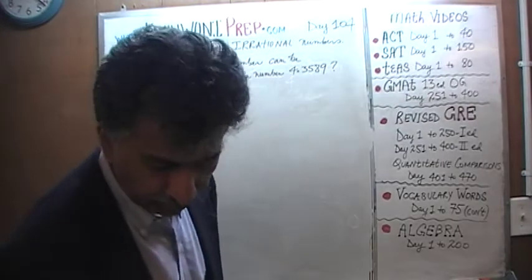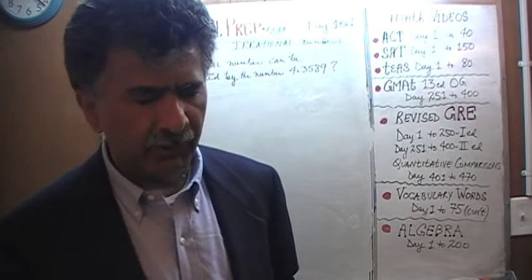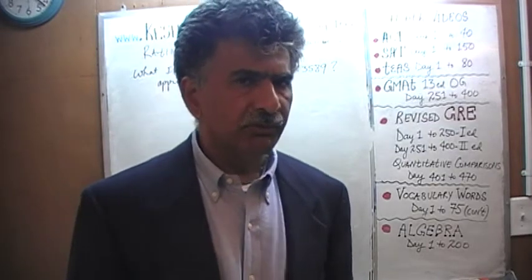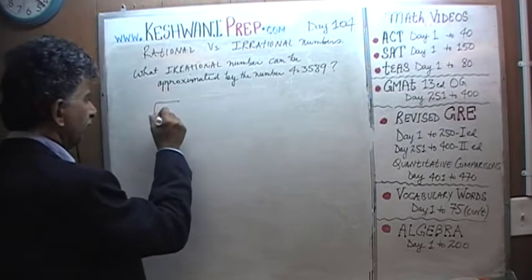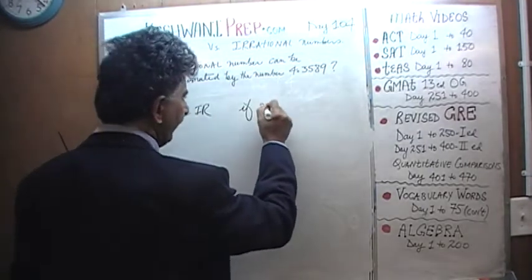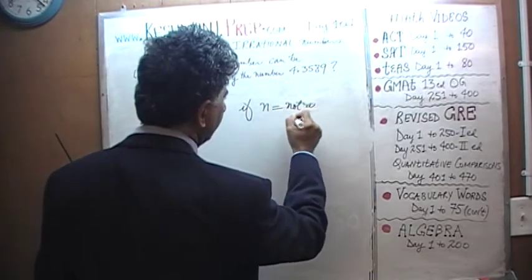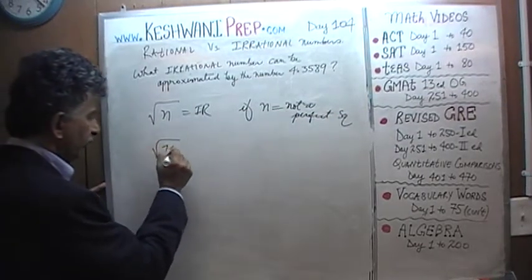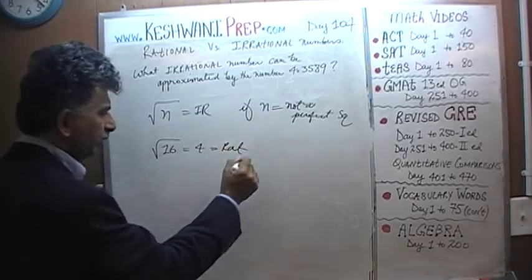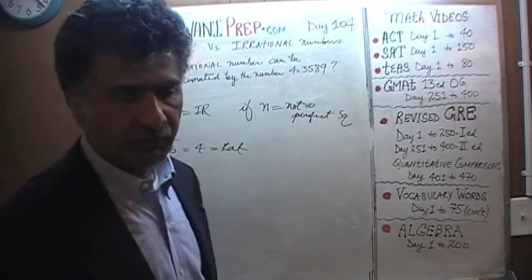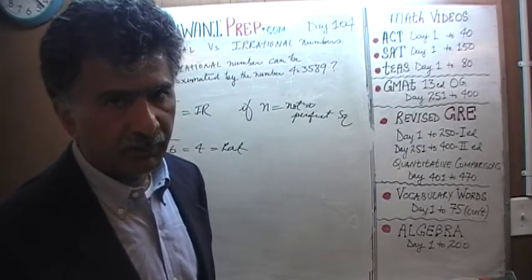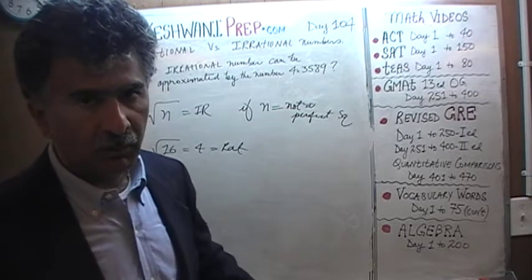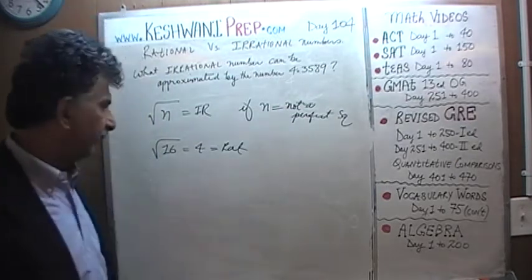We know we are dealing with an irrational number. What we learned on day number 101 and 102 is that the square root of most numbers is going to be irrational if n is not a perfect square. If n is a perfect square, the square root of 16 is just 4, which is rational because it can be written as a fraction. A rational number is something that can be expressed as a fraction — 4 can be expressed as 4 over 1, 8 over 2, or 400 over 100.